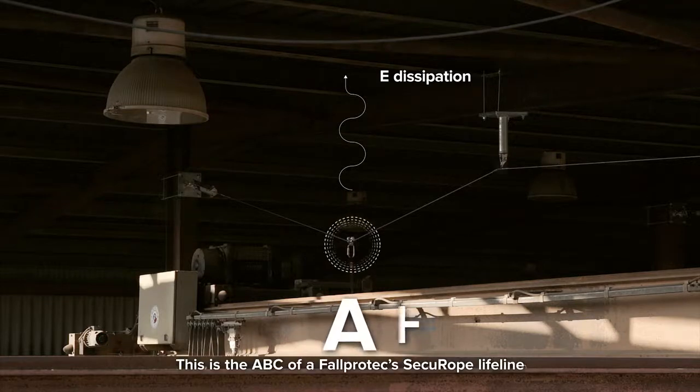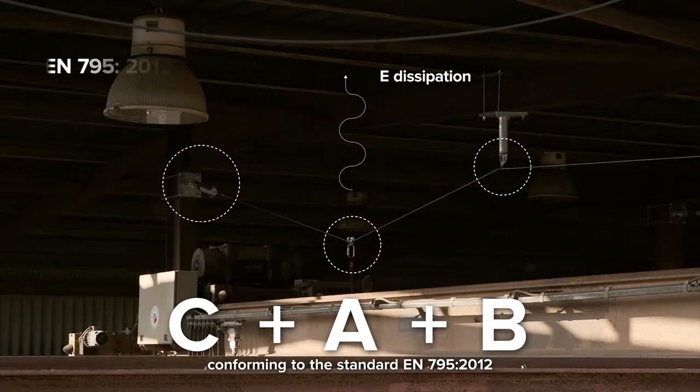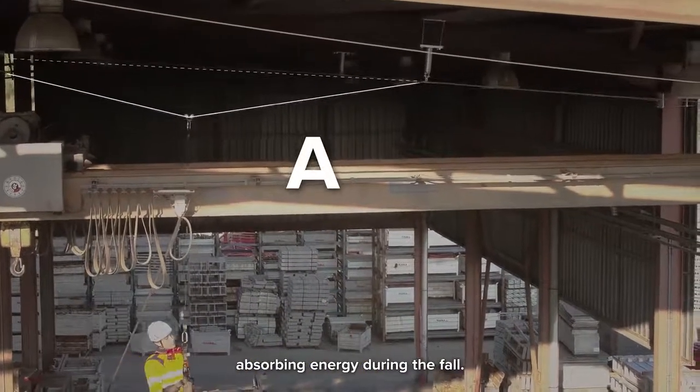This is the ABC of a FallProtek SecuRope lifeline, conforming to the standard EN795. A is the cable which deflects, absorbing energy during the fall.